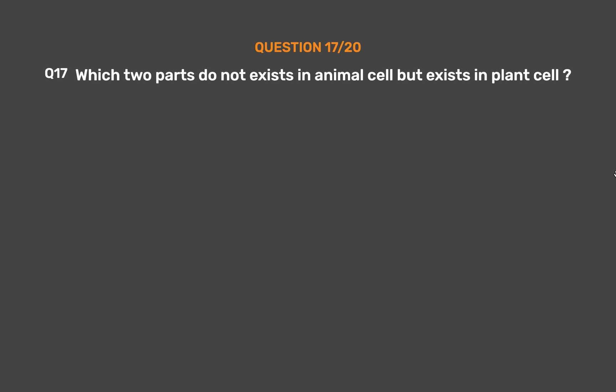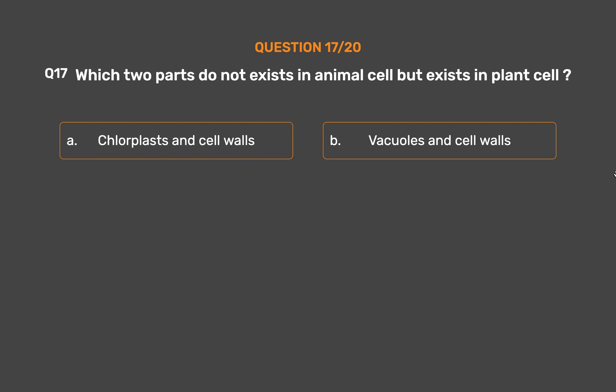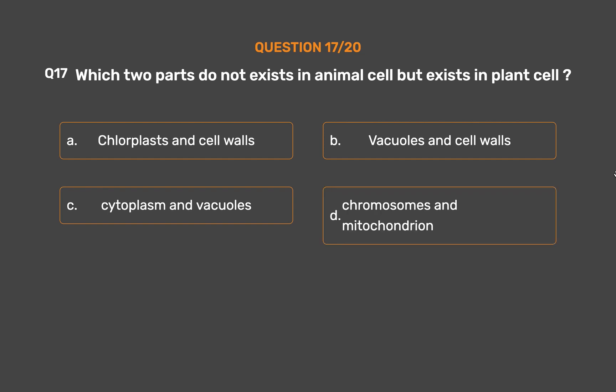Question number 17. Which two parts do not exist in animal cells but exist in plant cells? Option A: Chloroplasts and cell walls. Option B: Vacuoles and cell walls. Option C: Cytoplasm and vacuoles. Option D: Chromosomes and mitochondrion.